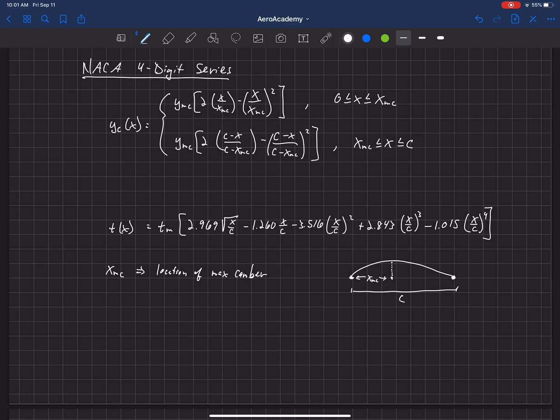Then we've also got ymc, and that is the maximum camber value. So this would be ymc. That's the maximum camber. Now some people just call this the camber, but it's really the maximum camber, because camber goes to zero at the ends. And so if somebody says, I've got a 2% camber airfoil, what they mean is 2% maximum camber. That's the maximum amount of camber there.